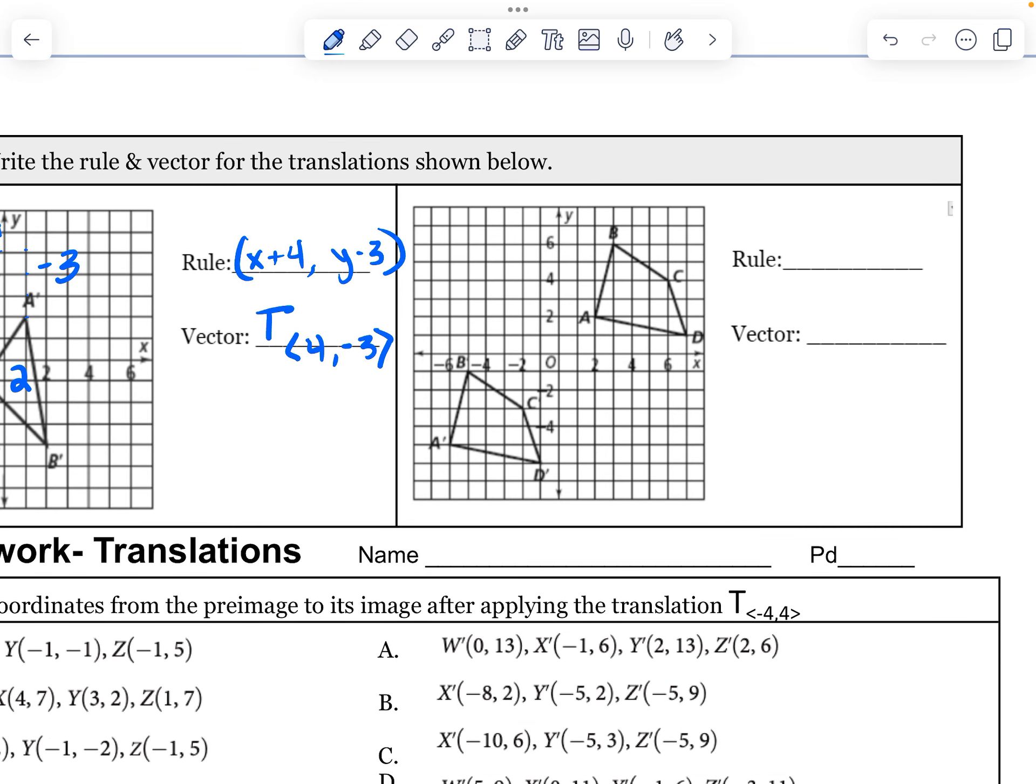This one. Prime is the second one. So this one's my first one. The rule is going to be an x, y value, and then the vector is going to be a translation. So over 1, 2, 3, 4, 5, 6, 7, over 8. Down 1, 2, 3, 4, 5, 6, 7. I have to go from A to A. So that was down 7. So this should be x minus 8, y minus 7. Negative 8, negative 7. Double check it just to make sure. Let's go D to D.